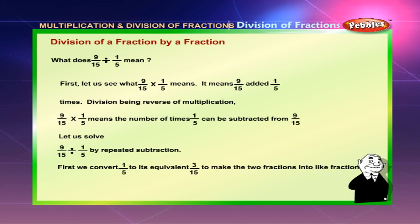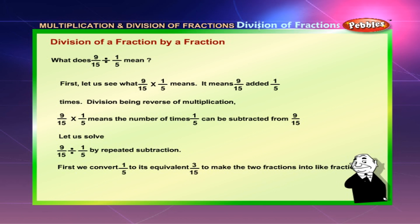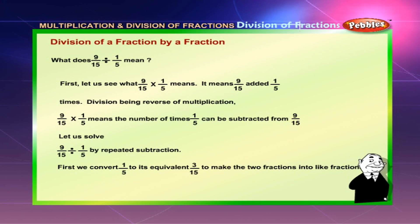Division of a fraction by a fraction: What does 9 by 15 divided by 1 by 5 mean? First, let us see what 9 by 15 into 1 by 5 means — it means 9 by 15 added 1 by 5 times. Division being the reverse of multiplication, 9 by 15 divided by 1 by 5 means the number of times 1 by 5 can be subtracted from 9 by 15. We convert 1 by 5 to its equivalent 3 by 15 to make the two fractions into like fractions.